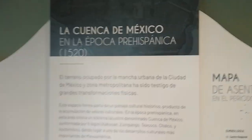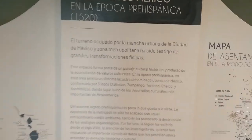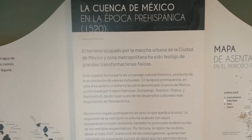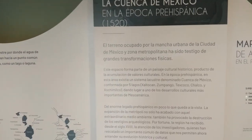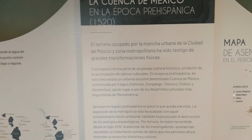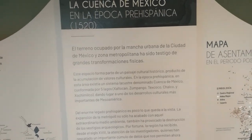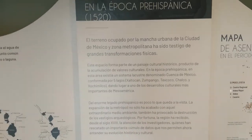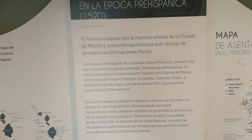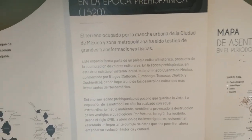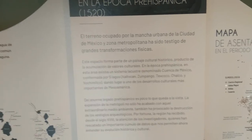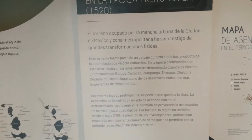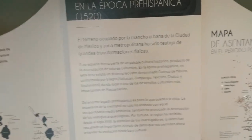La cuenca prehispánica en el año 1520. El terreno ocupado por la mancha urbana de la Ciudad de México y la zona metropolitana ha sido testigo de grandes transformaciones físicas. Este espacio forma parte de un paisaje cultural histórico producto de la acumulación de valores culturales en la época prehispánica. En el área existía un sistema lacustre denominado Cuenca de México, conformado por cinco lagos: Chaltocan, Zumpango, Texcoco, Chalco y Xochimilco, dando lugar a uno de los desarrollos culturales más importantes de Mesoamérica.